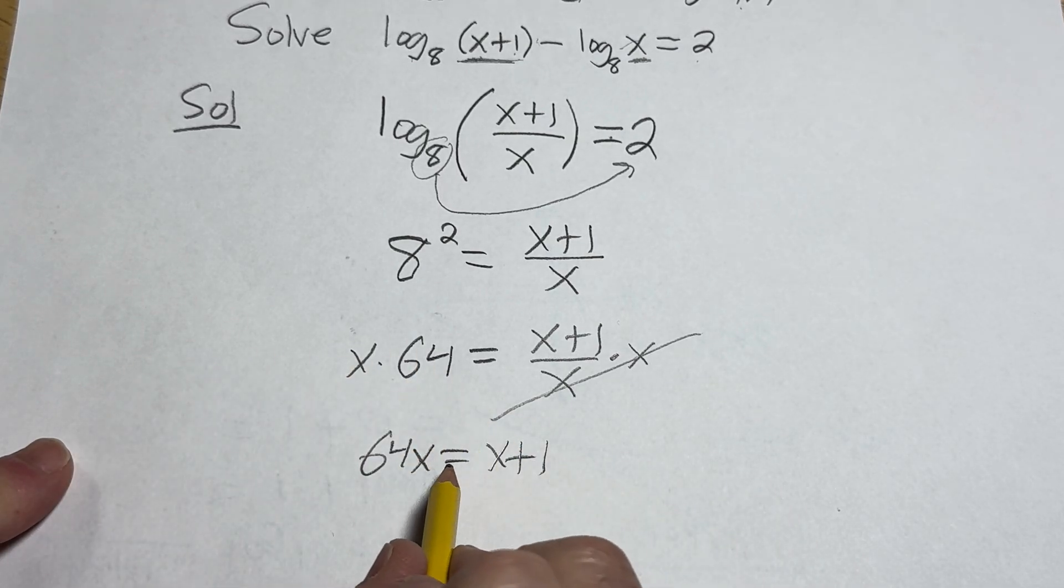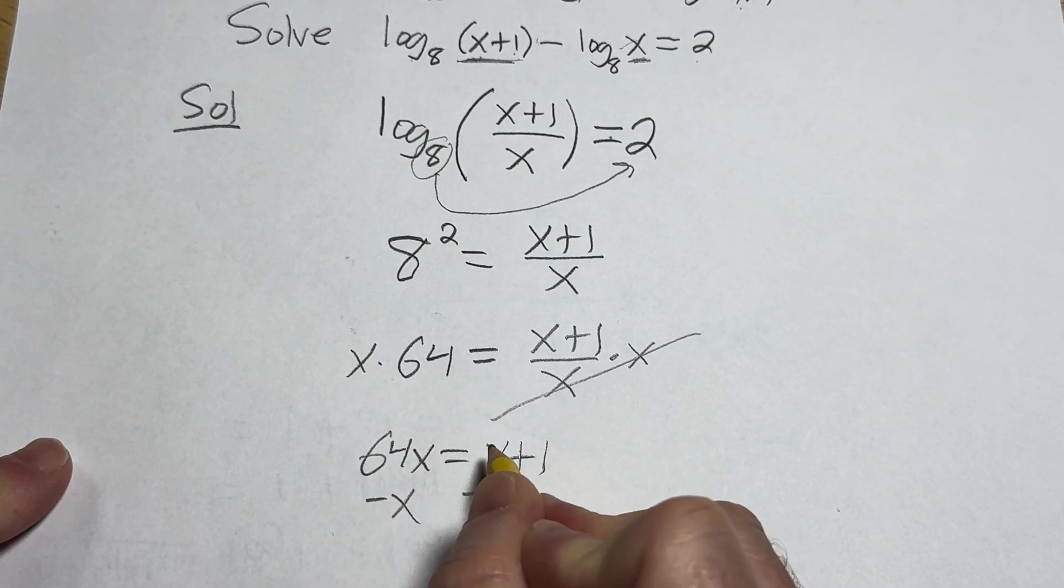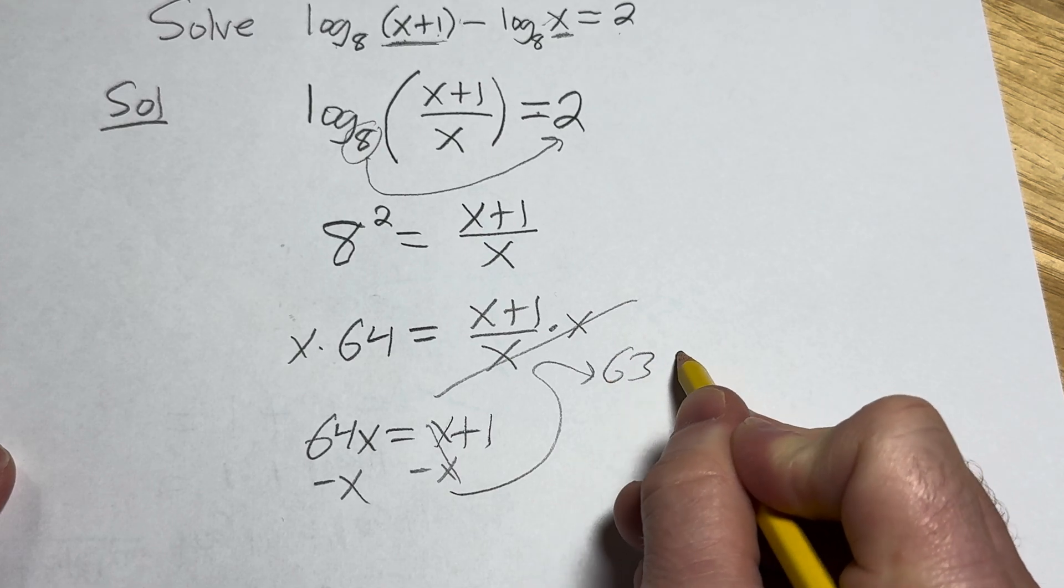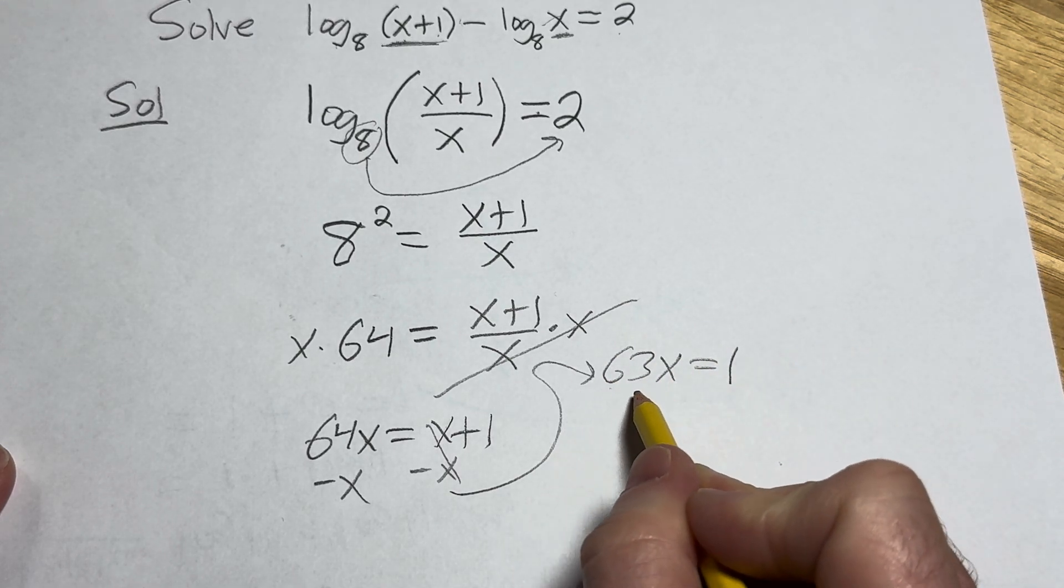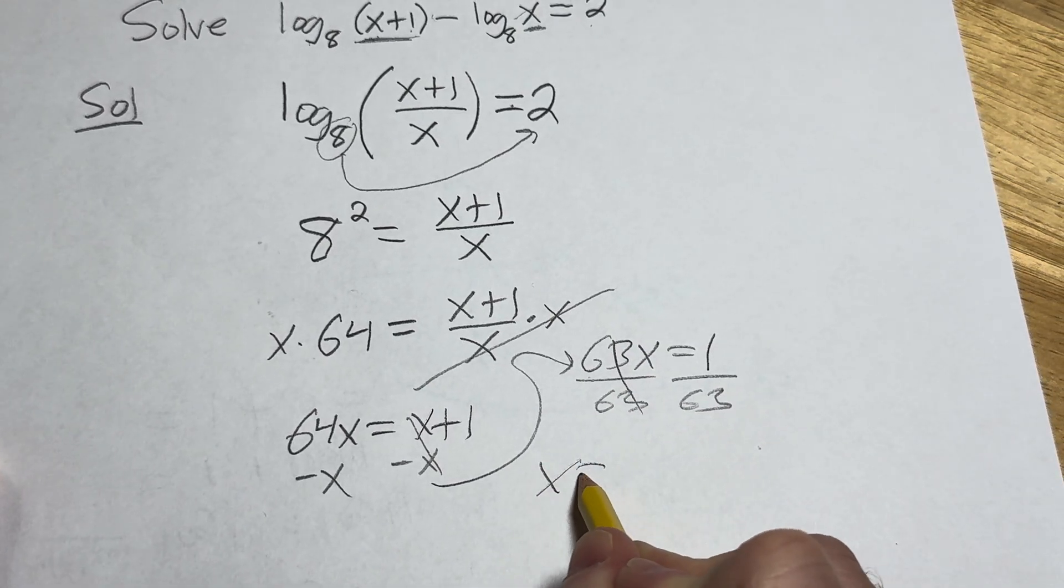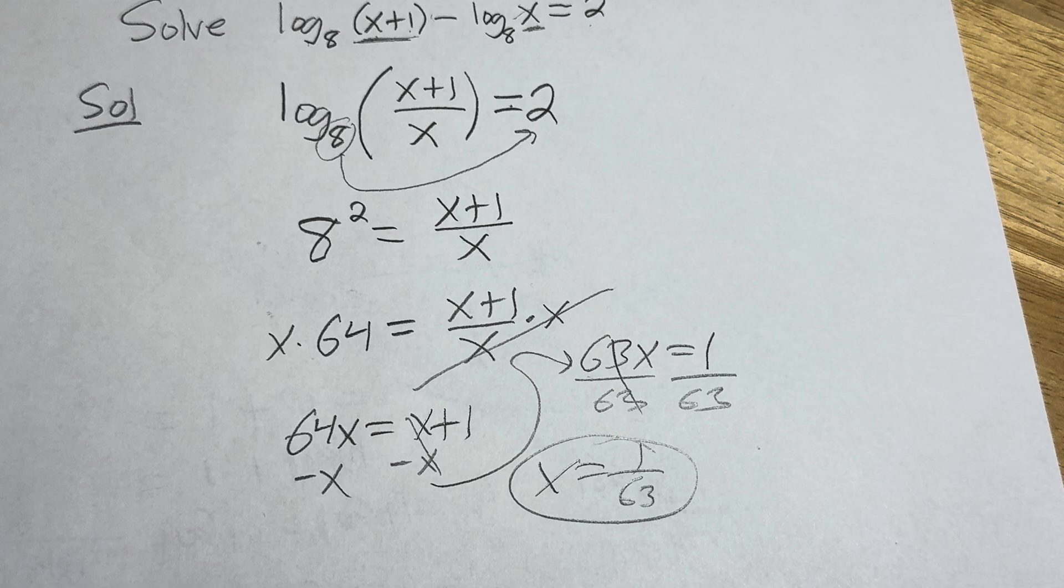To solve for x, we want all the x's on one side by themselves. So we'll subtract x, subtract x. So we have 63x equals 1. And then dividing both sides by 63 gives us x equals 1 over 63. And that, my friends, would be the final answer.